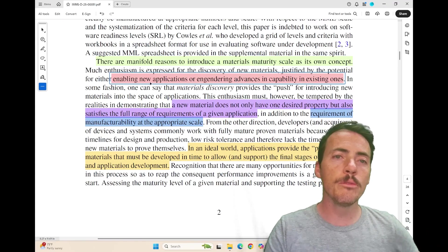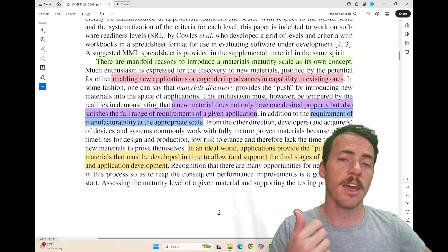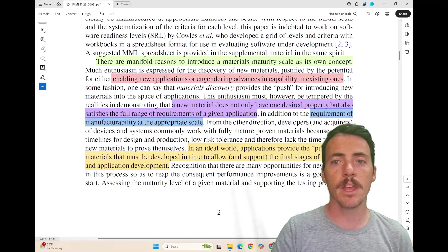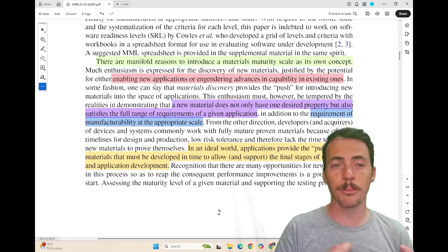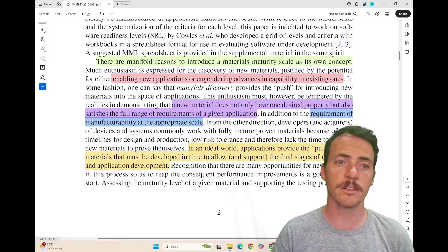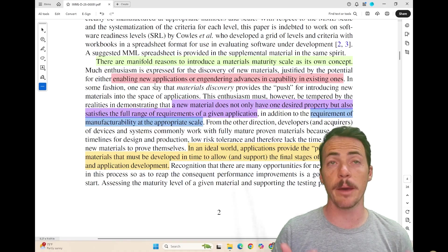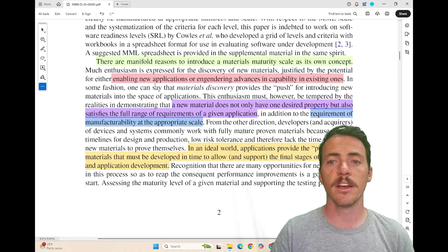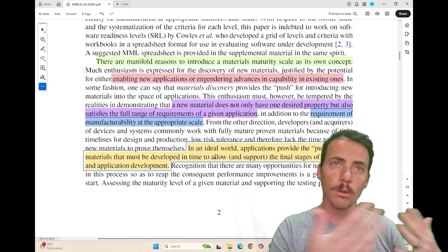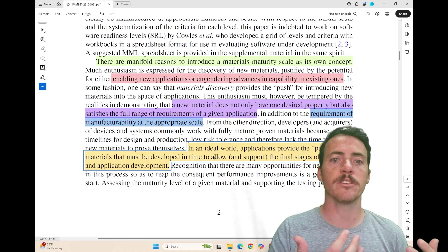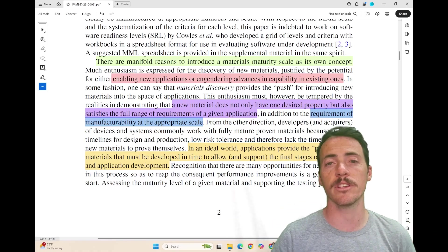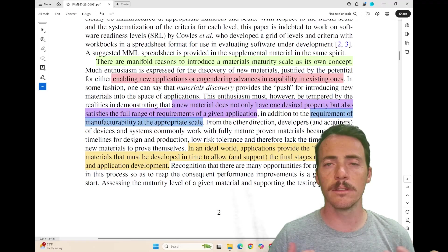First off, they point out that new materials often enable both new applications and engender new advances and capabilities in existing ones. They point out that very often new materials don't just have a single property, but they rather satisfy a full range of requirements for some given application, and that you have to consider manufacturability of that material at some given scale. And they point out this great sentence here that in an ideal world, applications provide the pull for new materials, but then they have to be developed in time to allow for the final stages of maturation and application development.